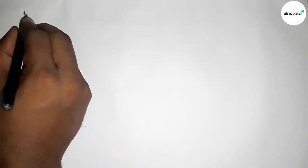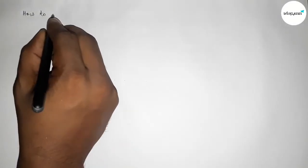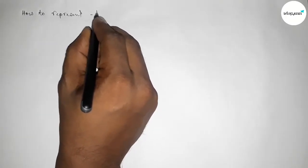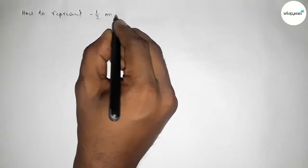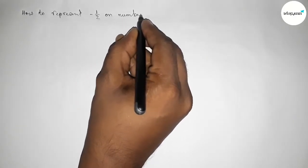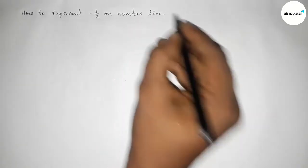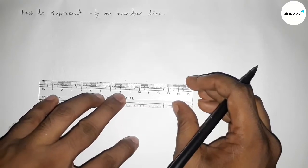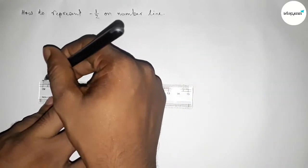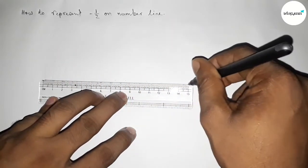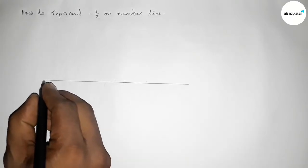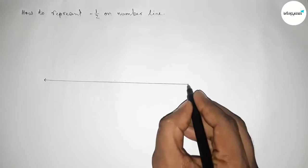Hi everyone, welcome to SI Share Classes. Today in this video we have to represent minus 1 by 2 on a number line in an easy way. So let's start the video. First of all, we have to draw here a number line. First, drawing here a line of any length and taking arrow marks on both sides.